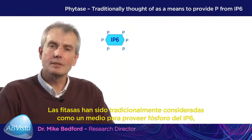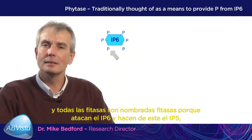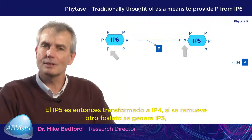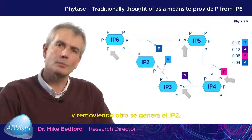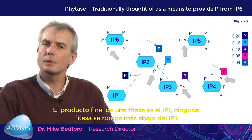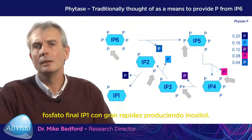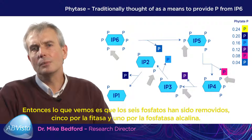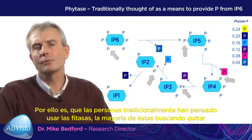Phytases are traditionally thought of as a means to provide phosphorus from IP6. All phytases are called phytases because they attack IP6 and make from it IP5, which is a new substrate which phytases continue to attack. IP5 is then made into IP4, another phosphate removed to generate IP3, and another phosphate removed to generate IP2. The final product of a phytase is IP1. No phytase breaks down IP1, but fortunately alkaline phosphatase in the gut is a very rapid enzyme that digests IP1, producing inositol and the final phosphate. So five phosphates are removed by phytase and one by alkaline phosphatase. That is how people have traditionally thought of using phytases.